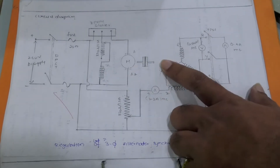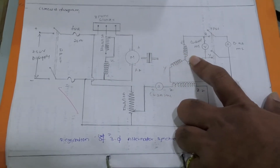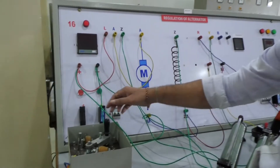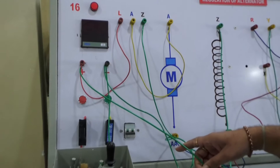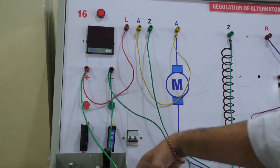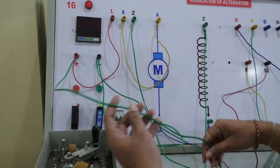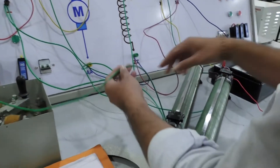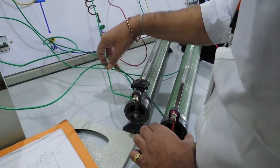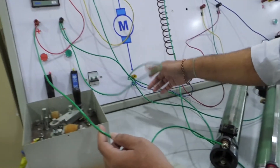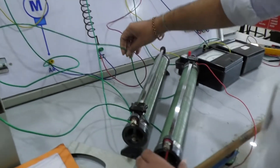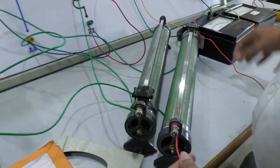We will take the readings up to the rated voltage. The connections are made as per the circuit diagram. From the supply, the positive terminal is connected to the rheostat of the alternator and the negative terminal is connected to the other end of the rheostat of the alternator.